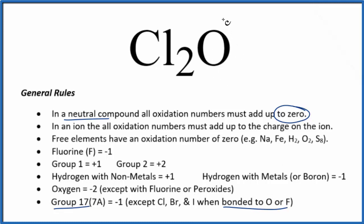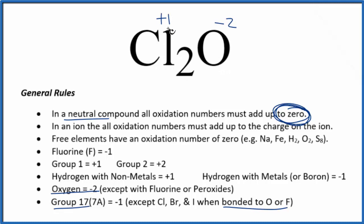We have to look at the oxygen here, which has an oxidation number of minus 2. So if this is minus 2, everything has to add up to zero. 2 multiplied by plus 1 gives us plus 2, and plus 2 plus minus 2 gives us zero. So these are the oxidation numbers for Cl2O. Note that each chlorine has an oxidation number of plus 1.